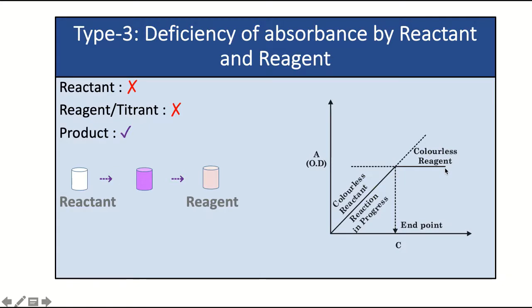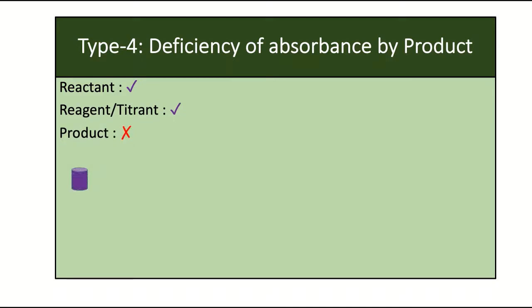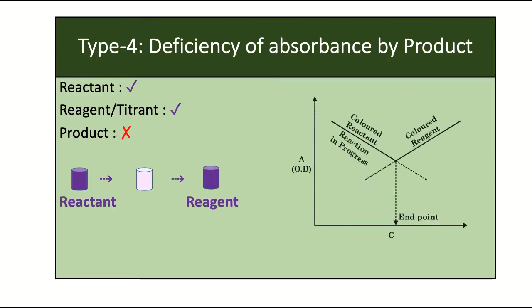Type 4 is the deficiency of absorbance by product — only the reactant and reagent show absorbance, whereas the product does not. Initially the absorbance is higher as the reactant is colored. On adding reagent, the product formed shows no absorbance, so the value decreases until the endpoint. After the endpoint, the added reagent shows absorbance characteristics, causing an increase in the graph. These are all the types of photometric curves.